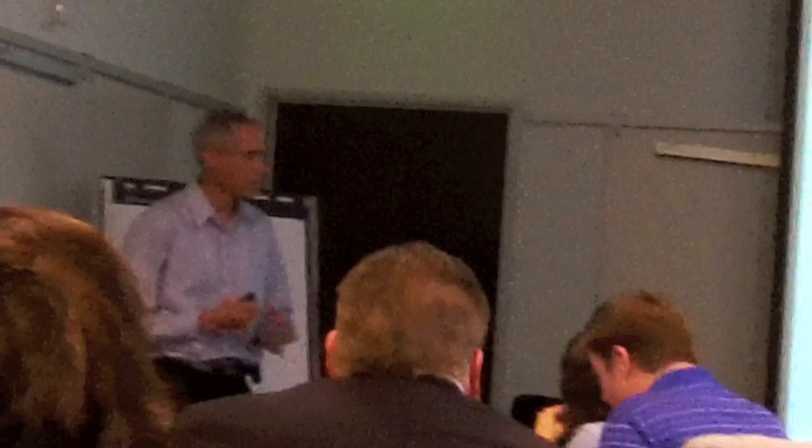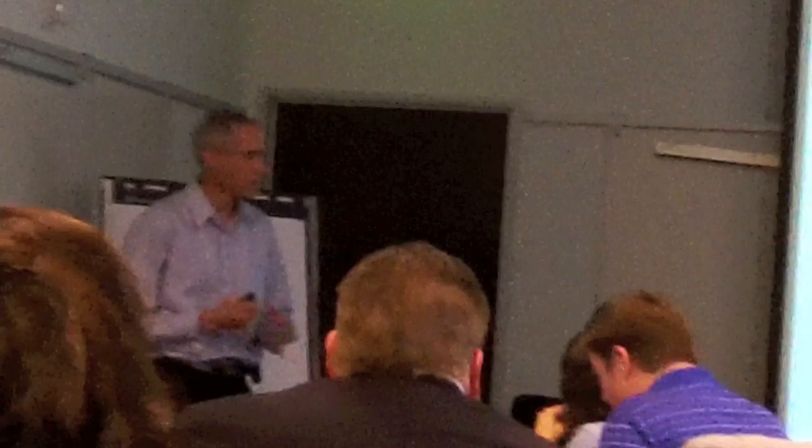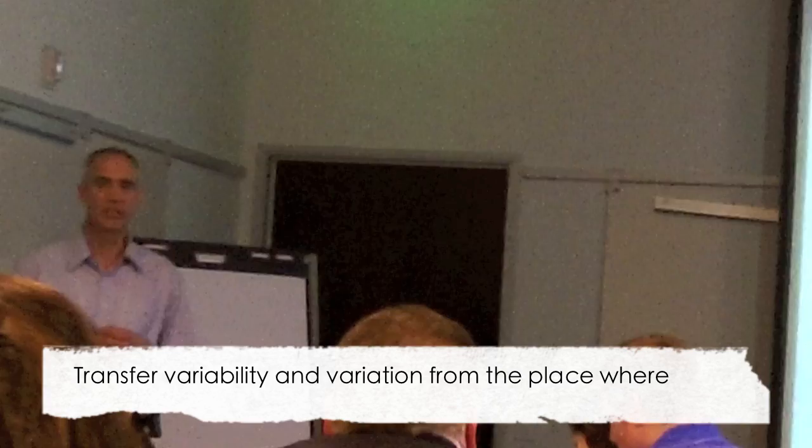Why would we want to do that? This is lesson one, or point number one. The purpose of control is to transfer variability or variation from the place where it hurts to a place where it doesn't hurt as much, in order to make a human's job easier.